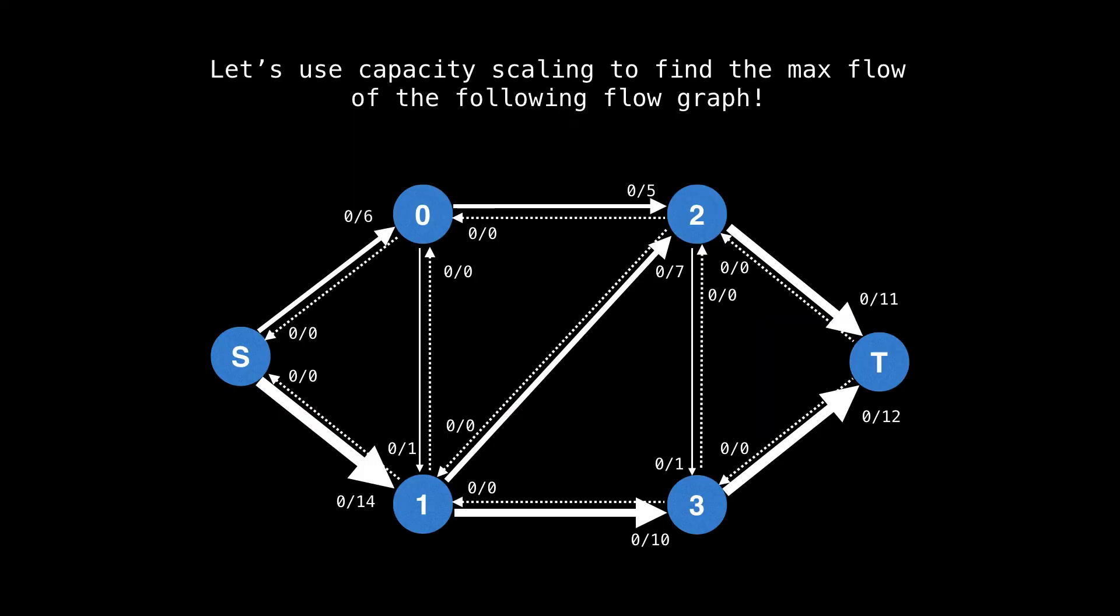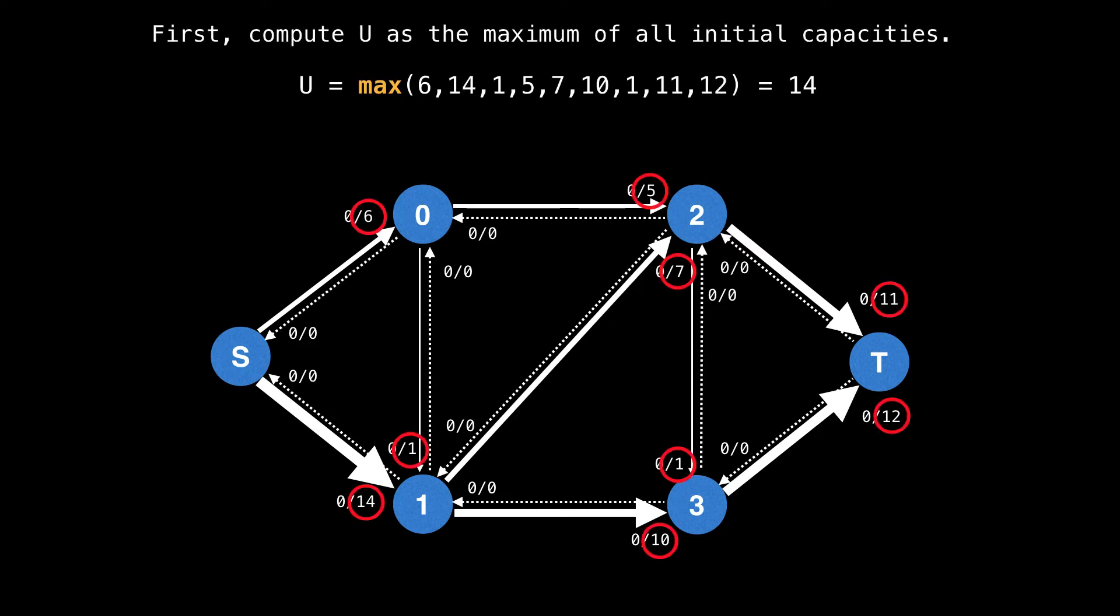Let's do an example. Let's find the maximum flow of the following flow graph using capacity scaling. First compute U as the maximum of all initial capacity values. In this example, U is the maximum of 6, 14, 15, 7, 10, 11, and 12, which happens to be 14.